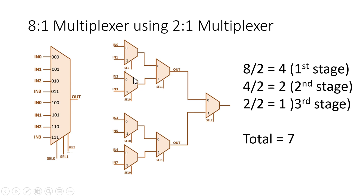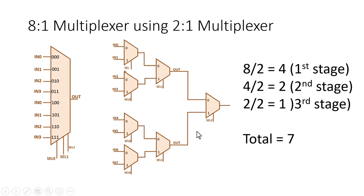At the output of the first stage we are getting 4 signals, so we require 2 2-to-1 multiplexers at the second stage. Dividing the output of the second stage by 2 gives 1 2-to-1 multiplexer at the third stage. Adding up all values: 4 plus 2 plus 1 equals 7. So we require 7 2-to-1 multiplexers to implement an 8-to-1 multiplexer.